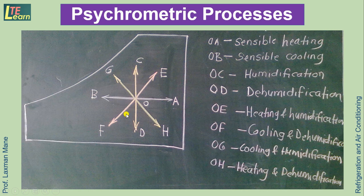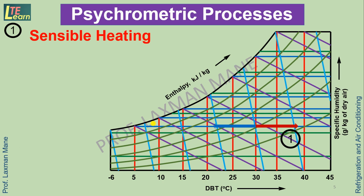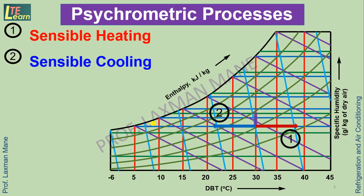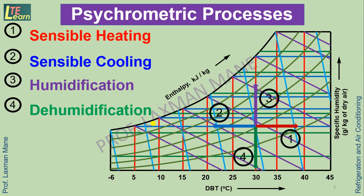The next four processes are combinations of the above: process OE is heating and humidification, OF is cooling and dehumidification, OG is cooling and humidification, and OH is heating and dehumidification. Let us see these psychrometric processes on the psychrometric chart — sensible heating, sensible cooling, humidification, and dehumidification.